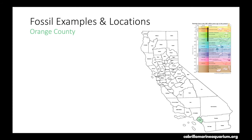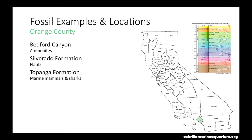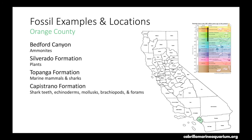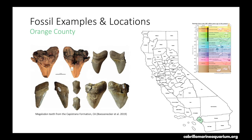Now we'll move on to Orange County. Fossils found here are a little bit older than LA — you can find stuff from about 200 million years ago with the beginning of the Jurassic through to the Quaternary. Here you can find some ammonite fossils within Bedford Canyon. Fossilized plants are also found within the Silverado Formation. Marine mammal and shark fossils can be found in the Topanga Formation. And you can find shark teeth, echinoderm, mollusk, brachiopod, and foram fossils within the Capistrano Formation. Here is a photograph of some fossilized Megalodon teeth from the Capistrano Formation.